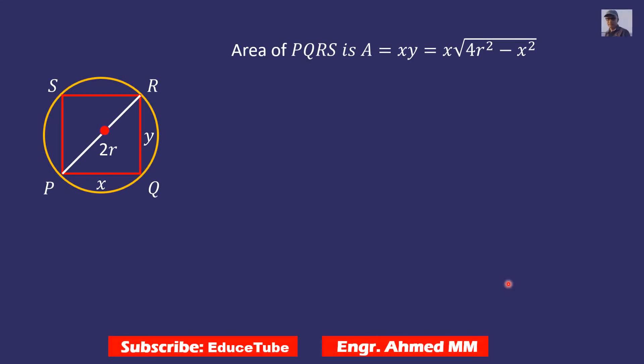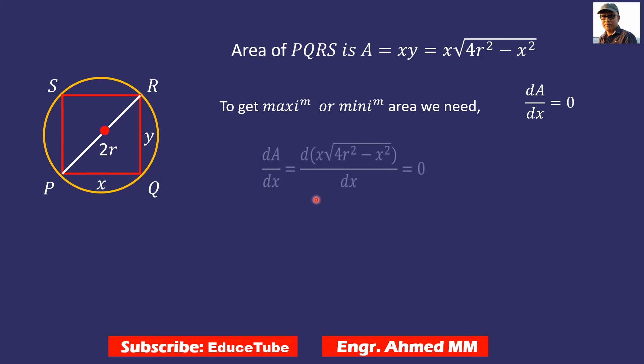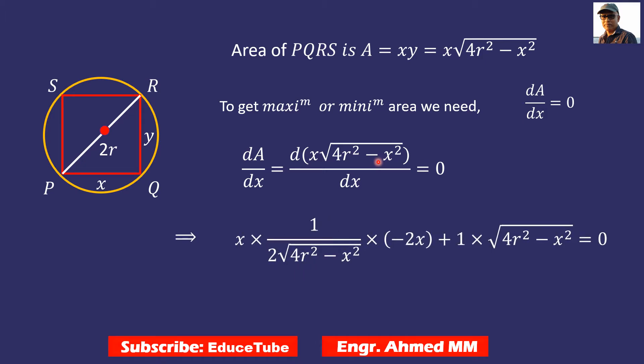So as I said, we need to find first derivative to get maximum or minimum, so dA/dx = 0. First derivative equal to zero we have to consider. So let's do the differentiations for this area term, and this will follow the product rule.